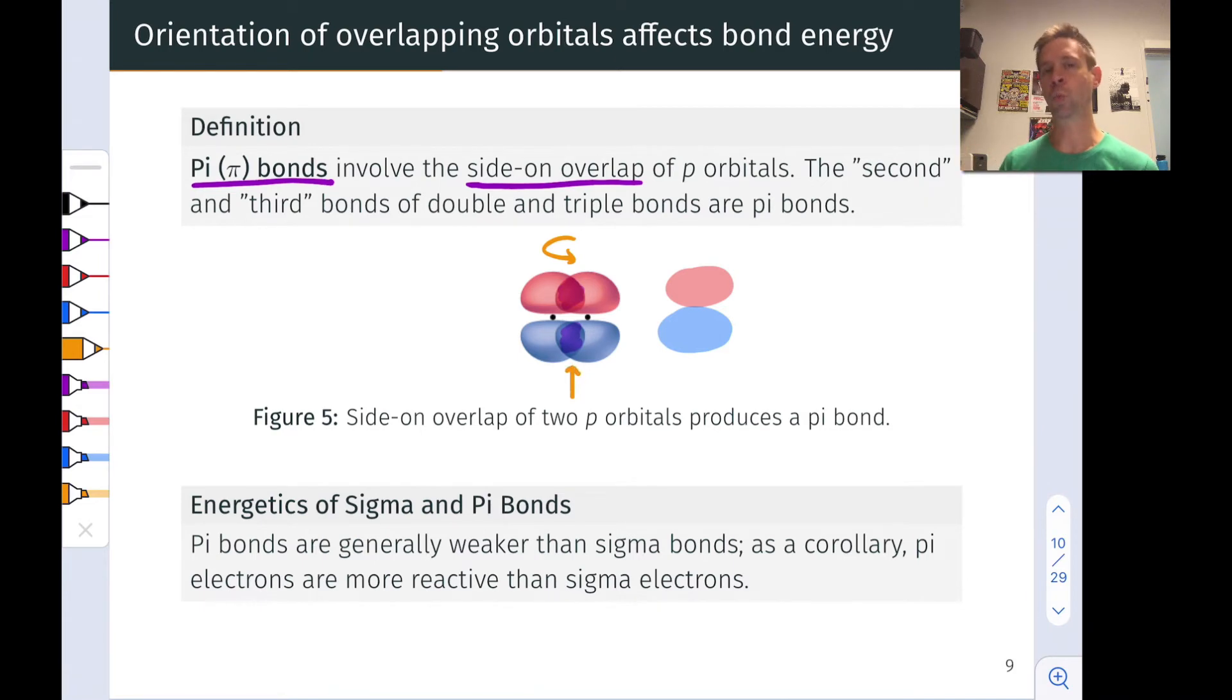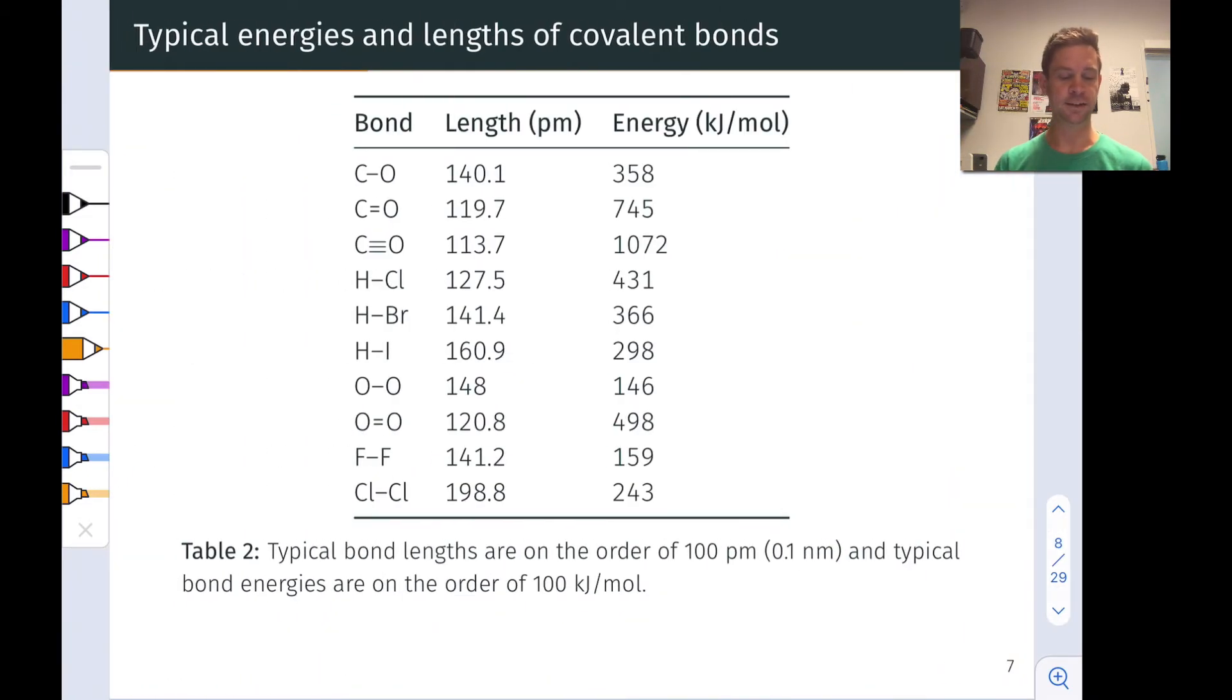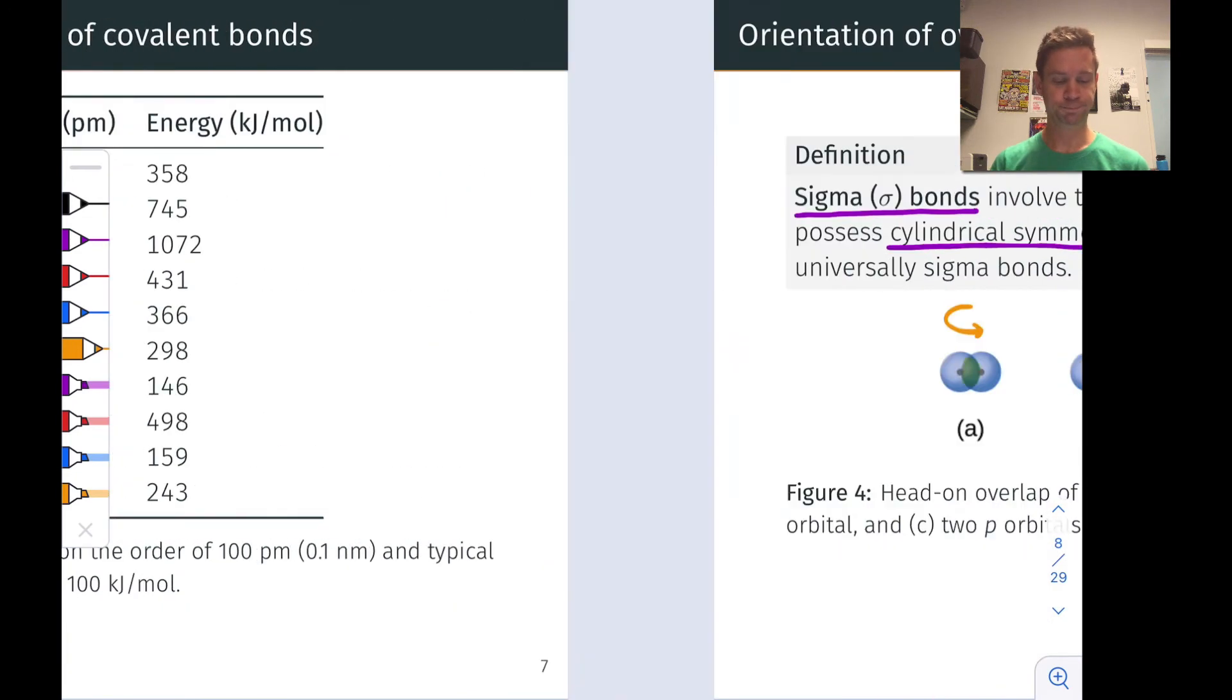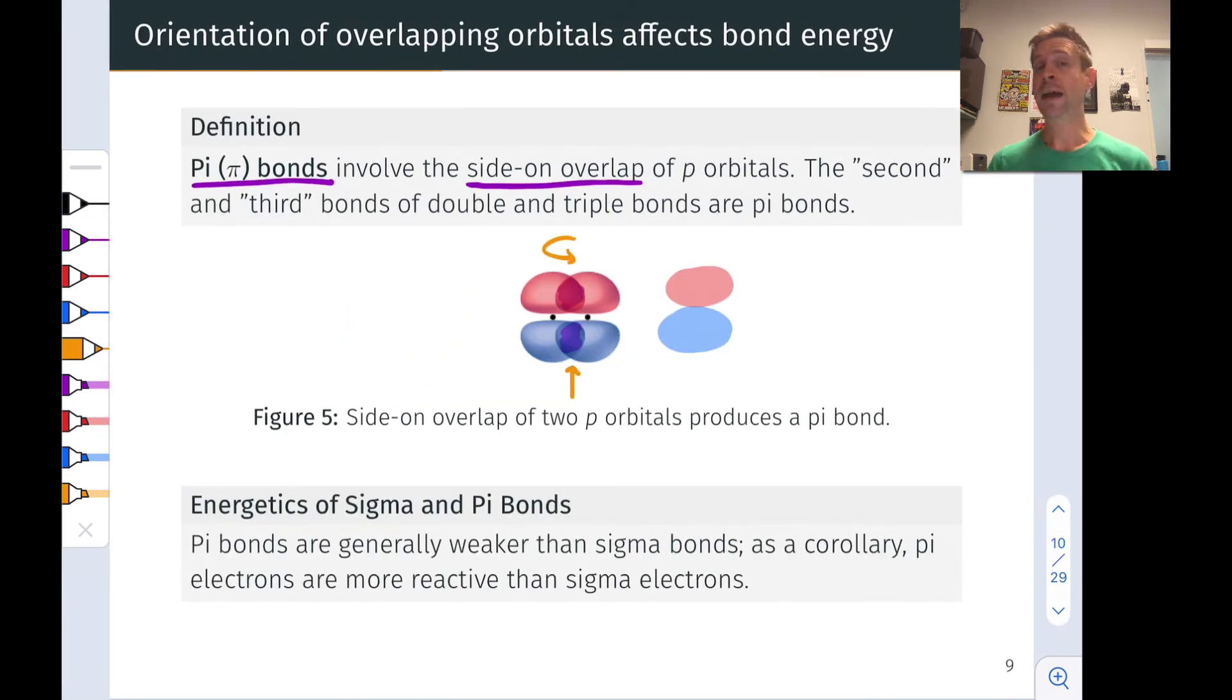Generally, pi bonds are weaker than sigma bonds. We can see that reflected in these bond energies where I don't exactly double in going from a CC single to a CC double bond energy. That's because the pi bond in the CC double bond is weaker than a CC sigma bond. This is a very important type of bonding to recognize, though, because pi electrons are very often reactive in molecules. So again, just to summarize, the key hallmark of pi bonds is really this side-on overlap of P orbitals, and we don't have that spherical symmetry or cylindrical symmetry that we see in the case of sigma bonding.